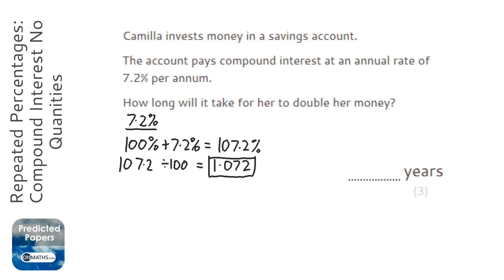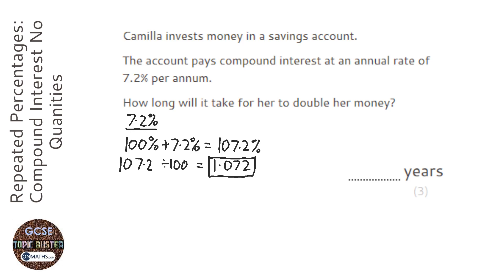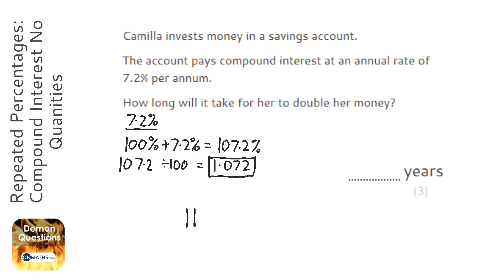To answer this question I'm going to use the calculator. I'll type in 1.072 and press equals first — the reason being that when I type in the next step it will say 'answer' rather than 1.072. So if I times by 1.072 again, that would be the 1.072 I started with times another one, meaning two years. Pressing equals gives me 1.149184.